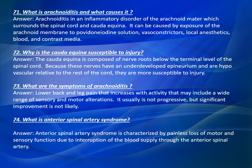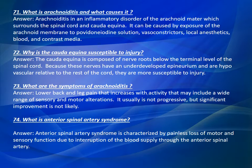Question 71: What is arachnoiditis and what causes it? Arachnoiditis is an inflammatory disorder of the arachnoid membrane which surrounds the spinal cord and cauda equina. It can be caused by exposure of the arachnoid membrane to povidone-iodine solution, vasoconstrictors, local anesthetics, blood, and contrast media.